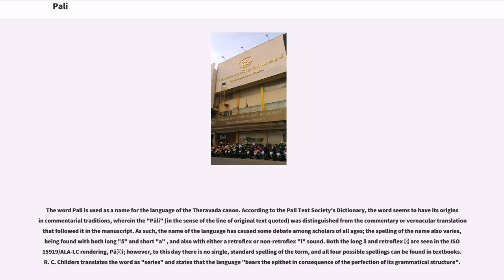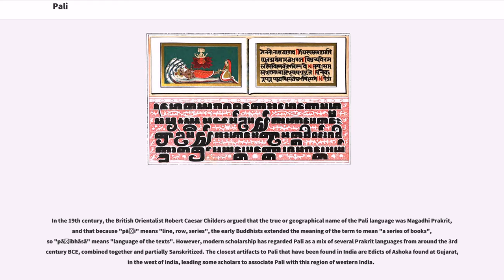R.C. Childers translates the word as 'series' and states that the language bears the epithet in consequence of the perfection of its grammatical structure. In the 19th century, the British Orientalist Robert Caesar Childers argued that the truer geographical name of the Pali language was Magadhi Prakrit, and that because Pali means 'line, row, series,' the early Buddhists extended the meaning to mean a series of books, so Palabasa means 'language of the texts.' However, modern scholarship has regarded Pali as a mix of several Prakrit languages from around the 3rd century BCE, combined together and partially Sanskritized.